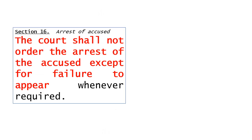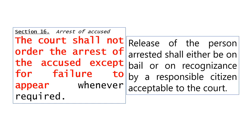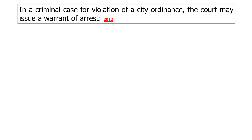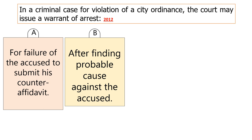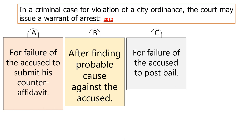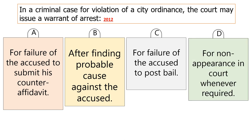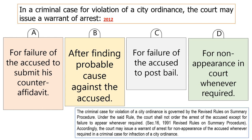Section 16 is a very important provision: the court shall not order the arrest of the accused except for his failure to appear whenever required. Release of the person arrested is either by bail or recognizance. In 2012, a bar exam MCQ asked: in a criminal case for violation of a city ordinance, the court may issue a warrant of arrest — for: (A) failure of the accused to submit his counter-affidavit; (B) after finding probable cause; (C) failure to post bail; or (D) failure to appear in court whenever required. The answer is D.